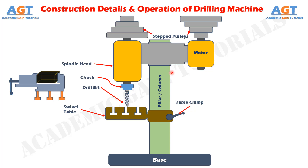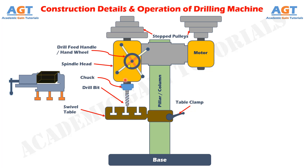Up here there is a drill feed handle or hand wheel. By rotating the hand wheel, the spindle moves up and down in the vertical direction in order to give the necessary amount of feed to the work. The rotational motion is converted into linear motion by means of a rack and pinion mechanism. We will discuss the full working mechanism in a few minutes, but let's finish knowing the construction details first.